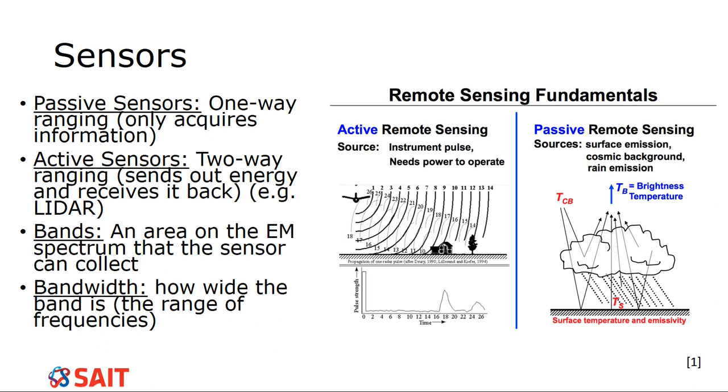The next one is active sensors. So the other kind, this is the other version, and this is known as two-way ranging. So it sends out its own energy and then receives it back. So LiDAR microwaves, active microwaves is SAR, which is what it's called. Those are active sensors. A flash on a camera is an active sensor. So it sends out the light so that it can receive the light.